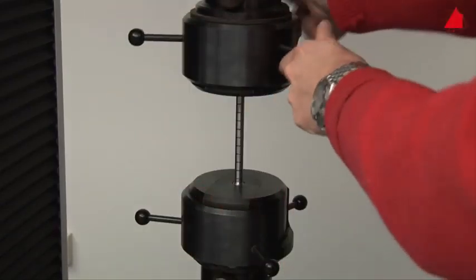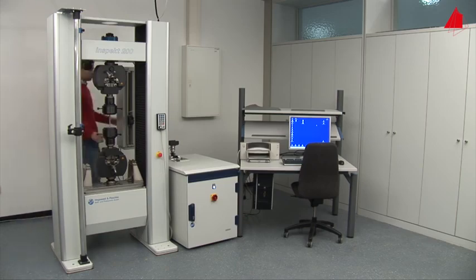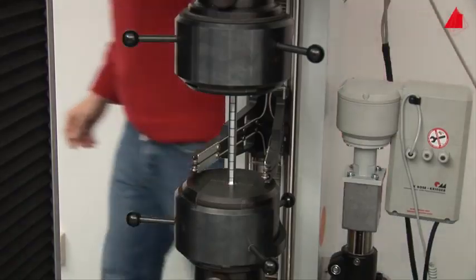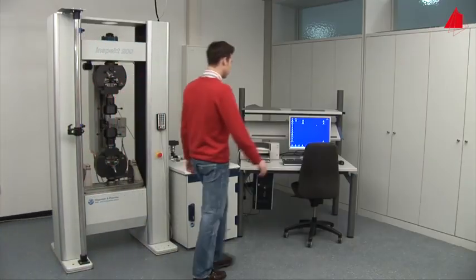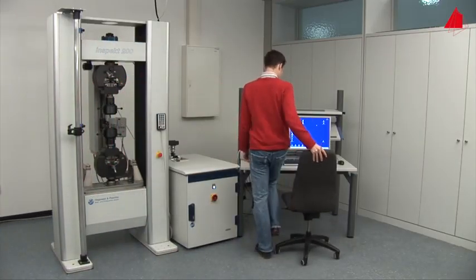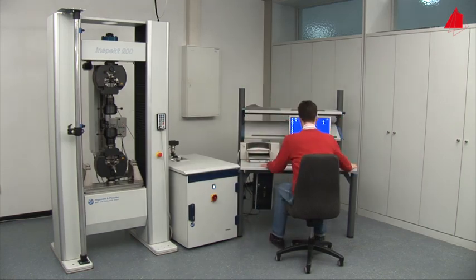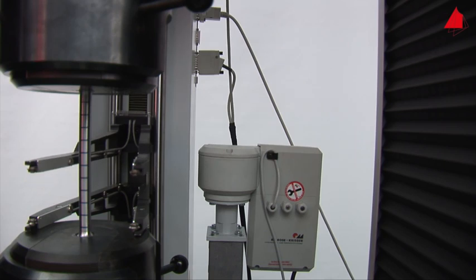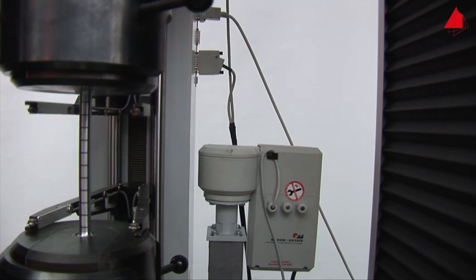In the next step, he swings the extensometer into its working position and checks that everything is correctly prepared. Then he selects all necessary testing parameters on the control computer. Ready, the test starts.